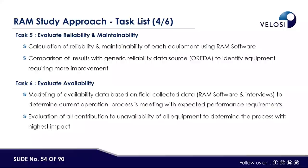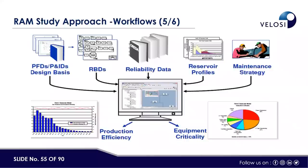Task five is evaluating reliability and maintainability — calculating the reliability and maintainability of each equipment using RAM software or in-house Excel sheets. Results are compared with OREDA to identify equipment requiring improvement. Task six evaluates availability — modeling availability data based on field-collected or client-provided data to determine if the current operational process meets expected performance requirements. We also evaluate the contribution to unavailability of all equipment to determine which process has the highest impact on production losses.